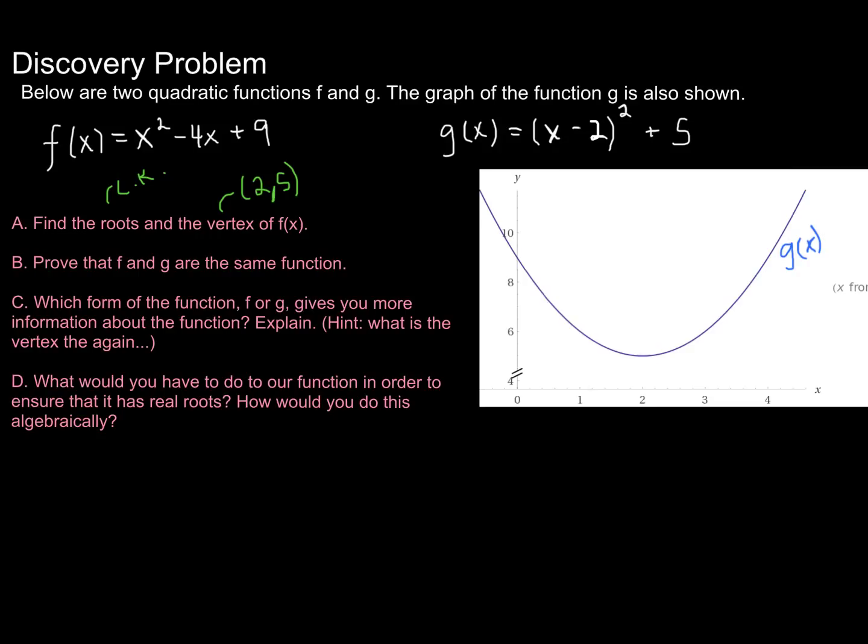Prove that f and g are the same function. So there's a couple ways that you could do this. To show that two things are the same, you need to show that they are completely identical. Well, you could try and take f of x and make it look just like g of x. Or you could try and take g of x and make it look just like f of x. I personally think it'd be much easier to just foil out x minus 2 times x minus 2. But if you really wanted to, you could complete the square for f of x and go that route. But what I would recommend doing is squaring out x minus 2 times x minus 2 by foiling. And you'll see that you get the exact same thing that we have for f of x. And so since they are both exactly the same, they must be the same function.